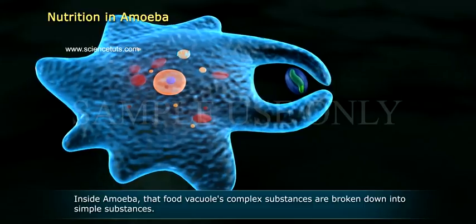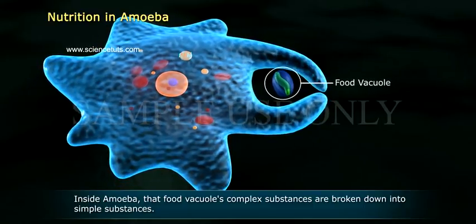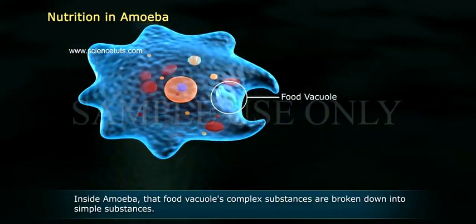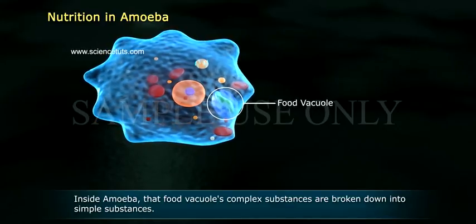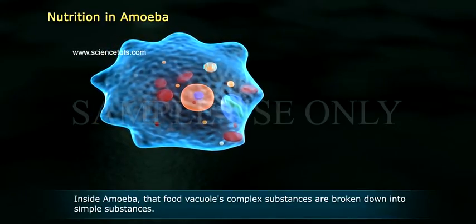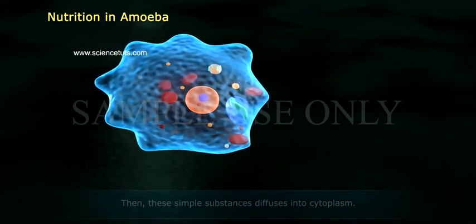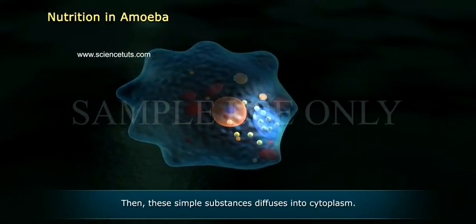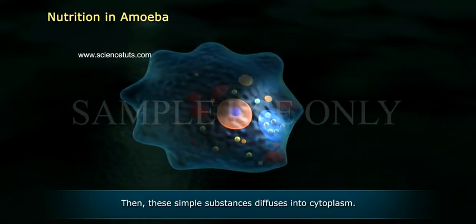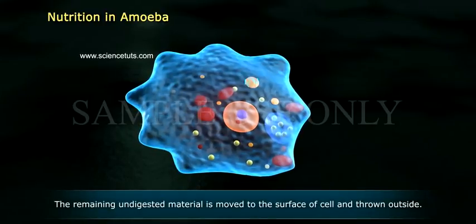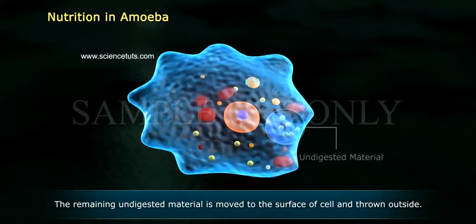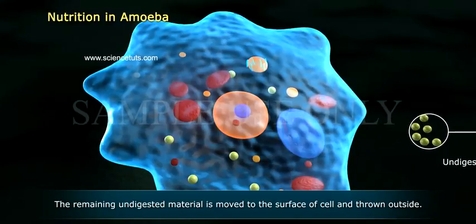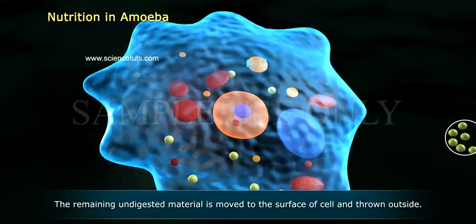Inside the amoeba, the food vacuole's complex substances are broken down into simple substances. These simple substances then diffuse into the cytoplasm. The remaining undigested material is moved to the surface of the cell and thrown outside.